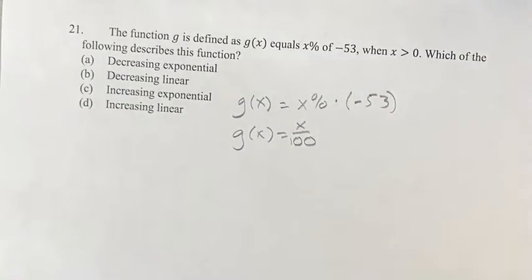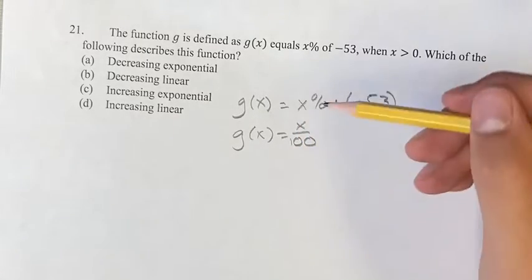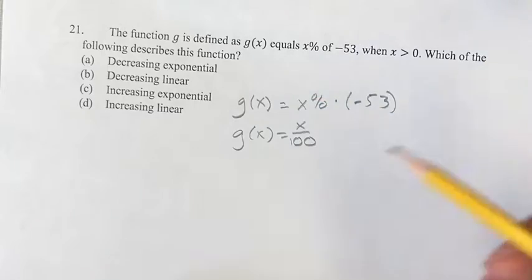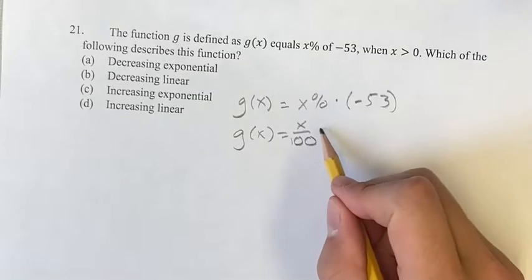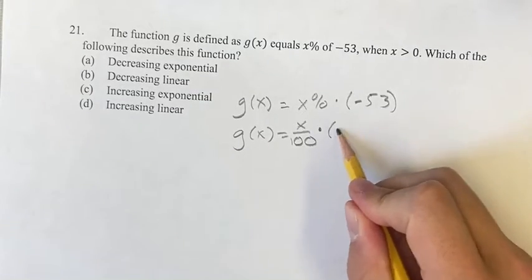Alright so 100% would be 1. That would just be the maximum value you could have, 0% would be 0. So it's gonna be somewhere in between there, right? Multiplying that again by negative 53.